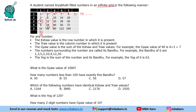We will derive a pattern and answer some questions. We are given certain conditions. The Shaw value of a number is the row number in which it is present — so 12 is present in the third row, so it has a Shaw value of 3. The Thraw value is the column number — so 12 is in the second column, so its Thraw value is 2. Similarly, 144 is in the fifth row and fifth column, so its Shaw value is 5 and Thraw value is also 5.